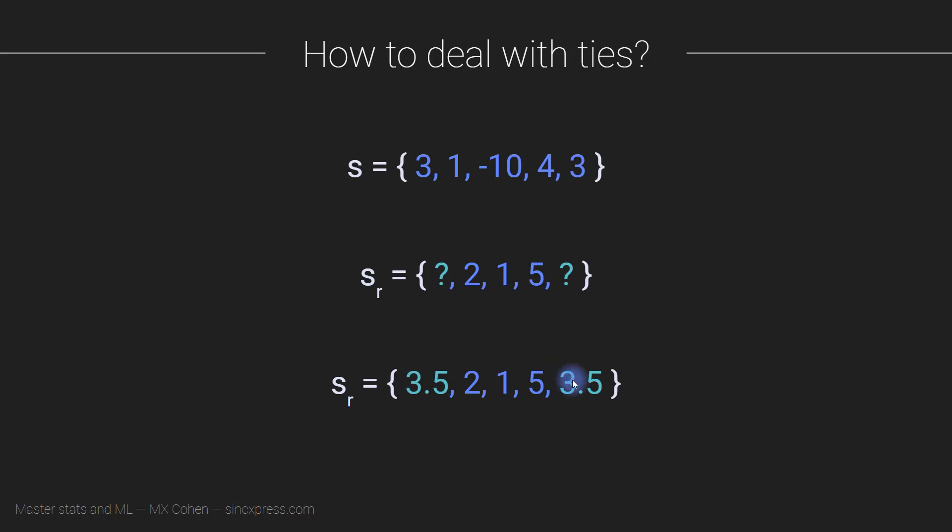We're missing an exact 3 and we're missing an exact 4. So this is called tied rank, and it's basically just a little adjustment to the rank transform for dealing with ties in the dataset.